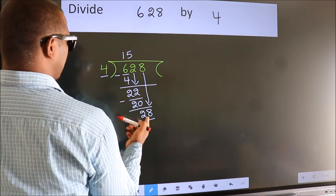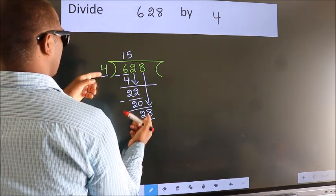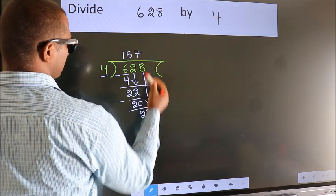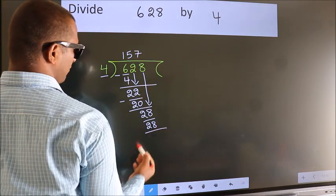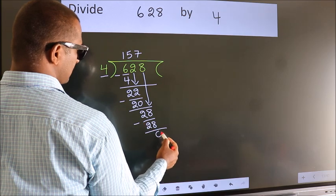When do we get 28? In 4 table. 4 sevens, 28. Now, we subtract. We get 0.